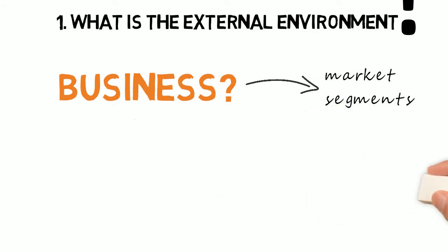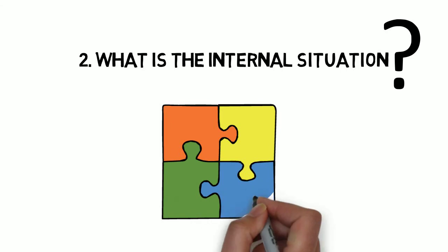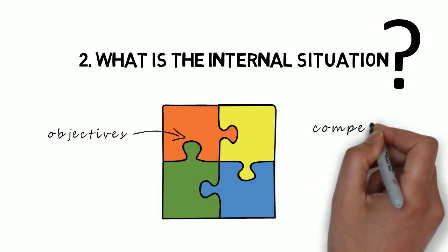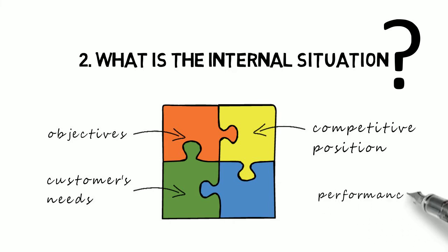For the moment, let's assume that this is a strategy for a business. So the second question is, what is the internal situation, including the business's current objectives, its competitive position, its customers, and how well it's serving the needs of those customers and its performance?